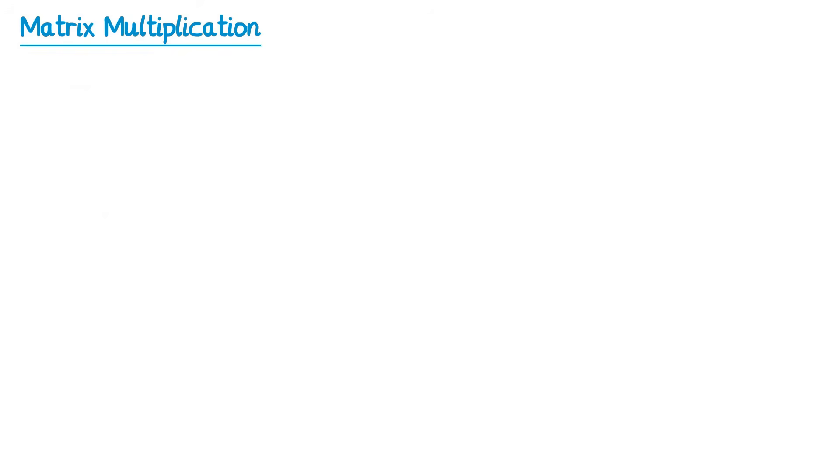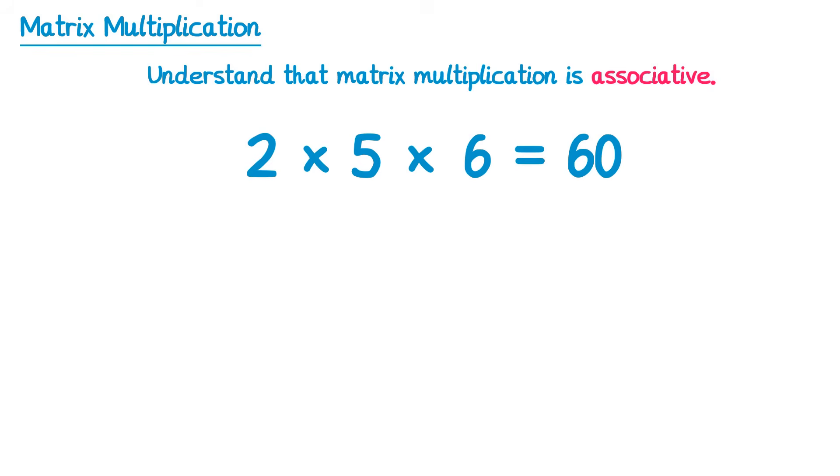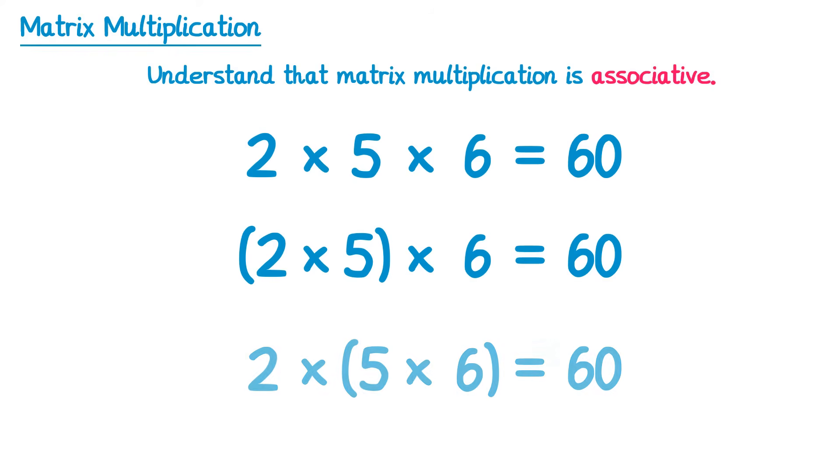The final thing that the specification asks you to know is that matrix multiplication is associative. Now again, if you don't know what associative means, I'll show you with an example. If you take 2 times 5 times 6, this gives you 60. Now you could do this by doing 2 times 5 first, which is 10, and then timesing that by 6 to get 60. Or you could do 2, and then times that by 5 times 6. 5 times 6 is 30. So 2 times 30 is 60. Now this property does hold for matrices.